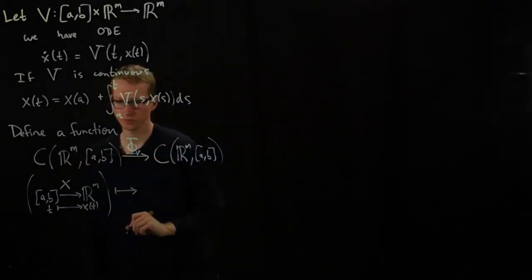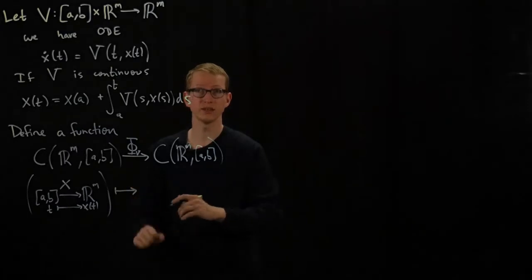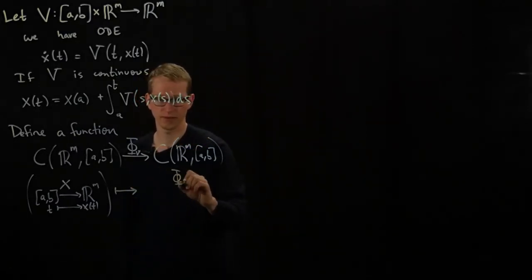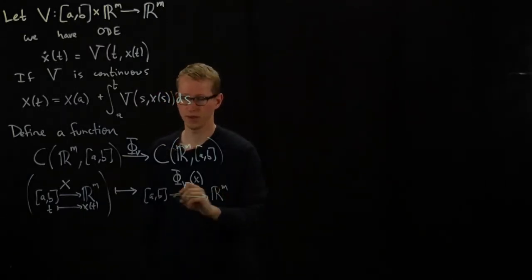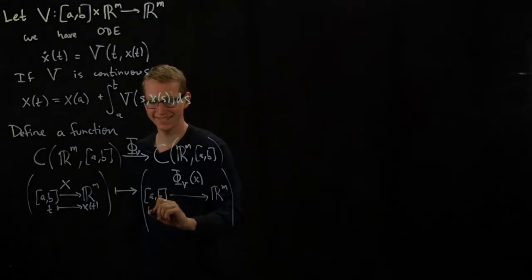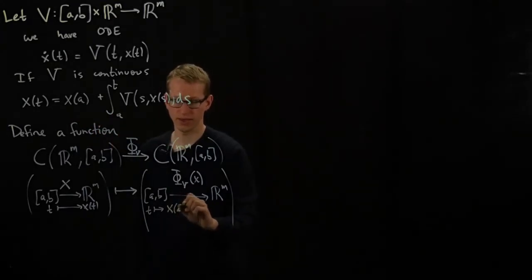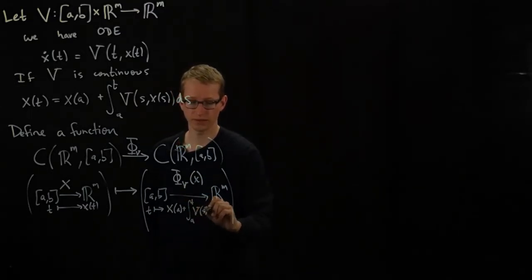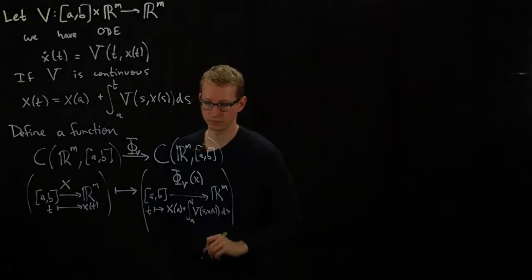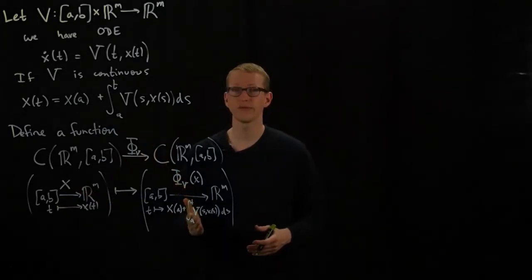What is this function? Well, because this is also going to be a function, I have to tell you what it does for every t in the domain. Let me write it as φ_V(x), and that's supposed to be a function on [A,B] to R^m. This function takes any t and sends it to x_A plus the integral of this vector field V at (s, x(s)) ds. You can check this is a function of t, and if x was initially continuous then this function is also continuous.